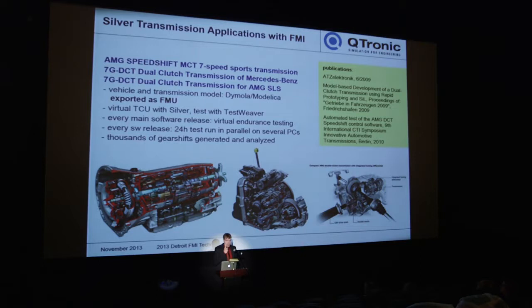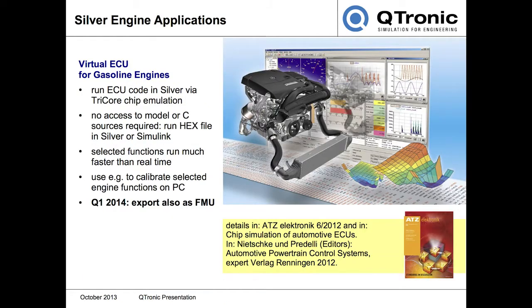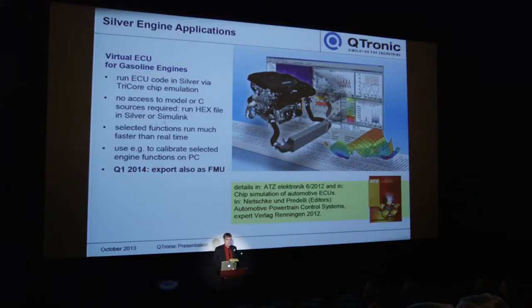Let me talk about some of the applications. For years now, Daimler has been using FMI technology to share plant models for all kinds of different transmission and powertrain applications. In the next quarter — the first quarter of 2014 — we will export all our... and this is a bit of a dirty hack when you don't have the C code from your Tier 1 supplier. Like, if you're running a Bosch ECU and you want to virtualize that, they won't give you the C code. We have a solution for this, and we will soon have a solution that lets you run it not just in Silver and Simulink, but in any FMU-supporting tool.